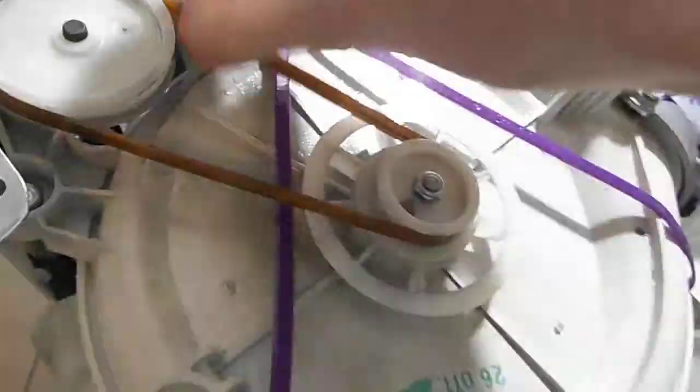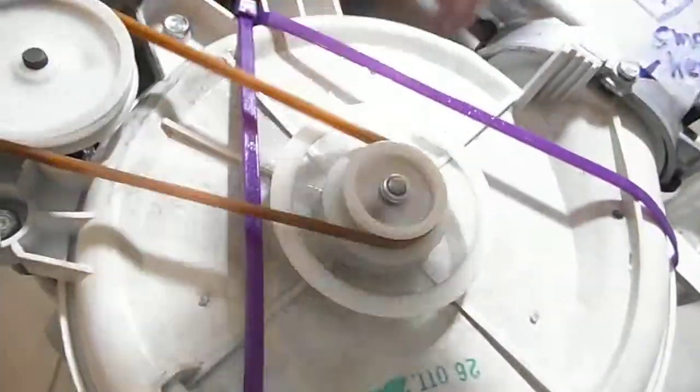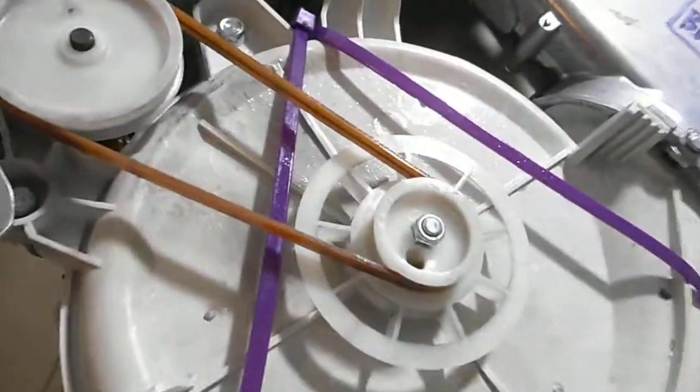Alright so the belt's on and it's spinning more or less how I'd like it except I'm going to keep doing the lubrication thing until it stops showing up with rust.